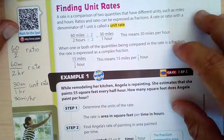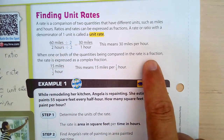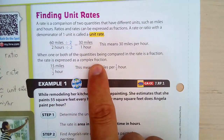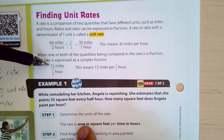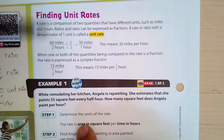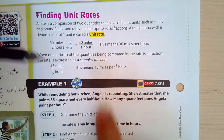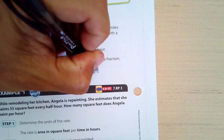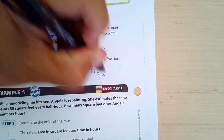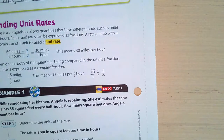When one or both quantities being compared is a fraction, the rate is called a complex fraction — a fraction inside a fraction. For example, 15 miles per one-half hour is a complex fraction. This means 15 divided by one-half, and since 15 is the same as 15 over 1, we can manipulate it from there.